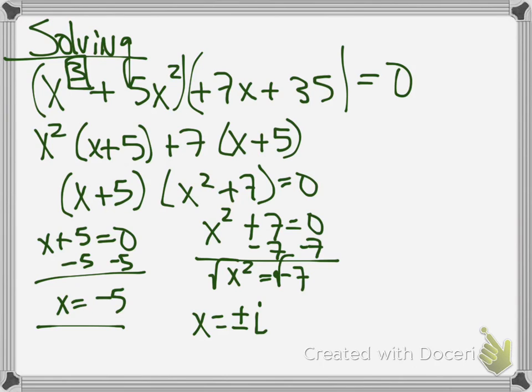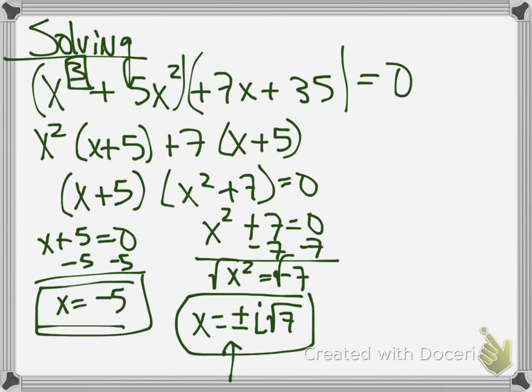Because there is a negative under the square root, I am going to put an i. There is no square root of 7, so I just leave it as square root of 7. So I have an answer of plus minus i square root of 7. Keep in mind, that one right there, you could not see on the calculator because it's an imaginary number, so it would not appear on the graph. So there's your three answers. x equals negative 5, positive i square root of 7, and negative i square root of 7.